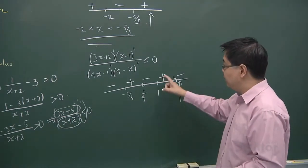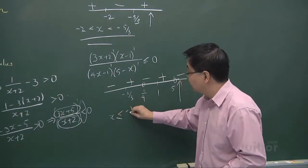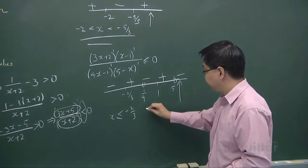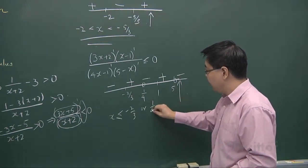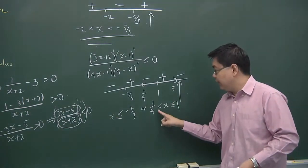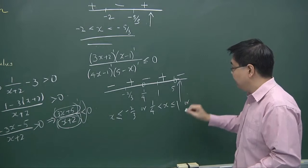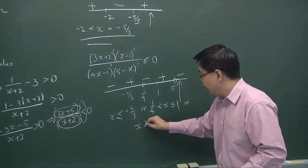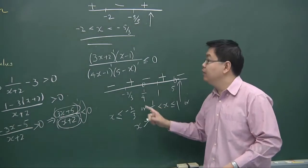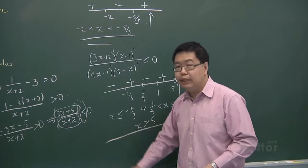We want less than or equal to 0. The solution is: x less than or equal to negative 2 thirds, or x in the open interval (1 quarter, 1], or x greater than 5. Note that 1 quarter and 5 are excluded since they make the denominator zero, while negative 2 thirds and 1 are included since they only affect the numerator.